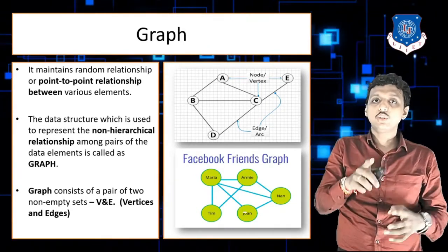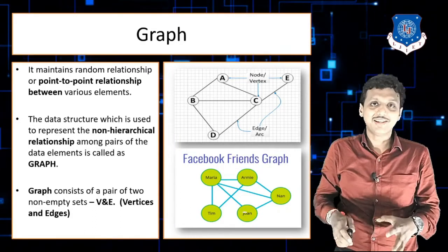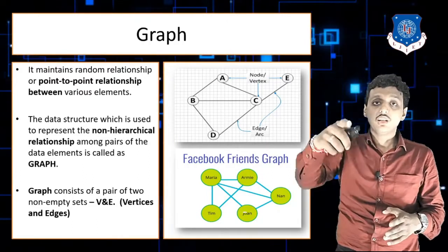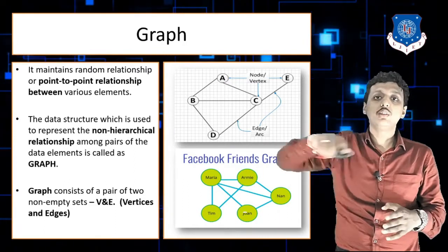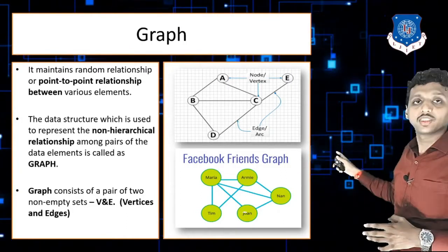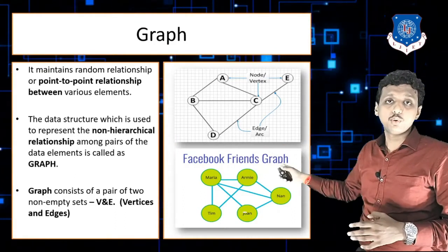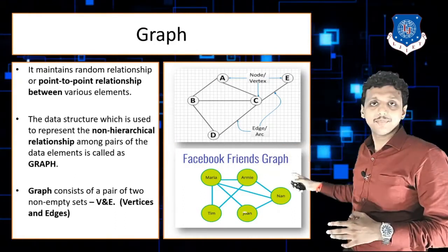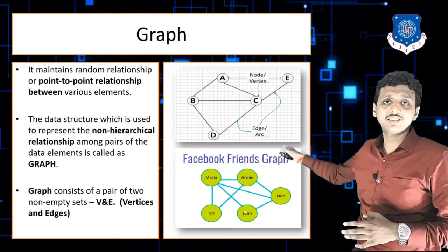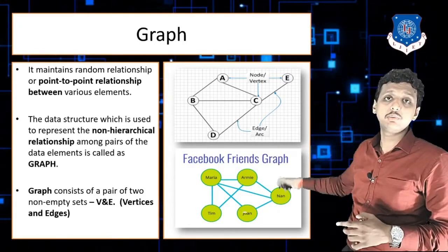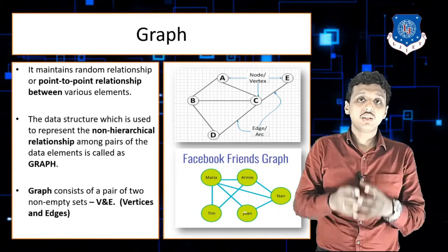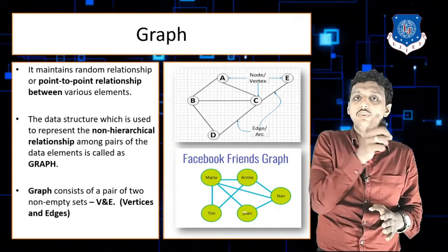A real-time example of graph: in your Facebook account you can see your network of friends and mutual friends. If you and I have 21 mutual friends, that means between your node and my node there are 21 different nodes which are common between us. This is the real-time example of graph used in Facebook. The circles are nodes and the lines connecting them are edges. Graph shows a non-hierarchical relationship — that is a key difference between tree and graph.